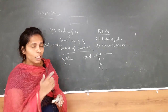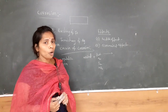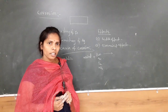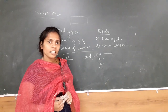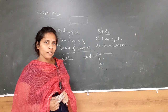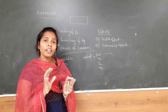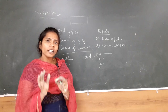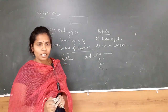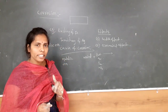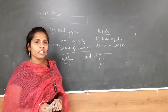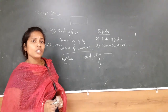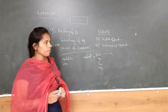Corrosion always takes place at the anode — wherever the cathodic part is, that part does not undergo corrosion. Corrosion takes place at the anode because corrosion is nothing but the oxidation process. Now let us see the types of corrosion.